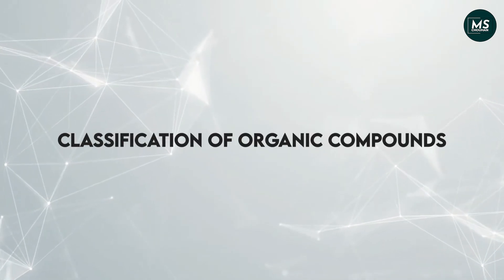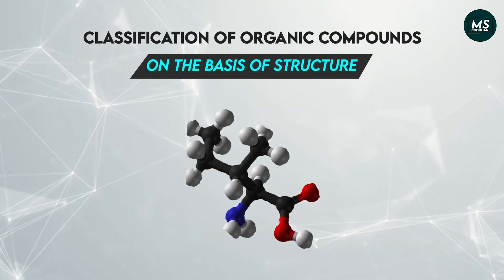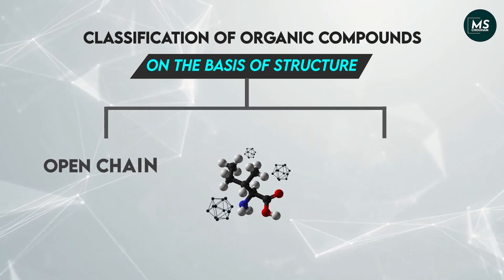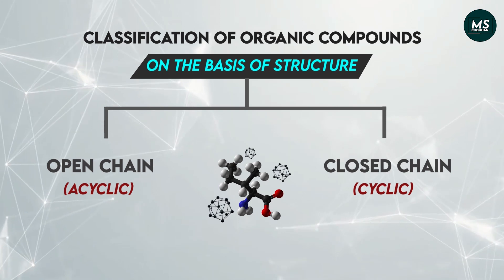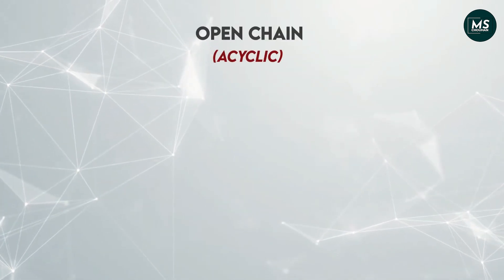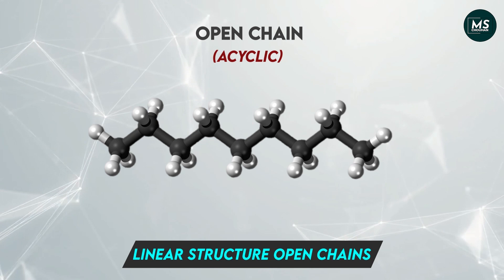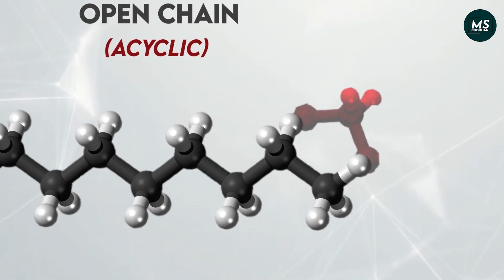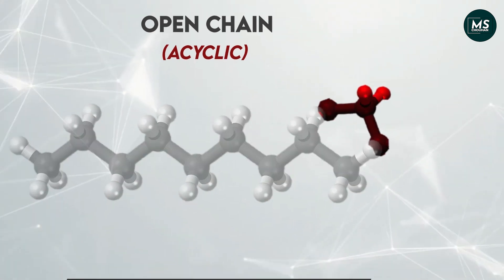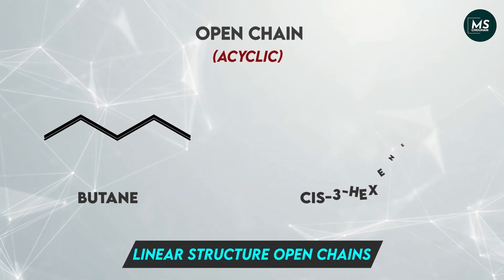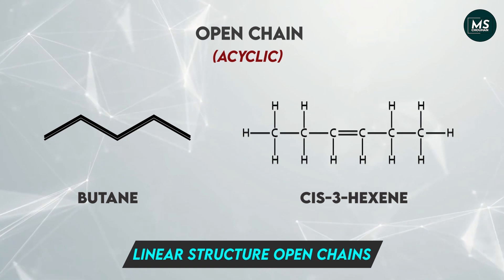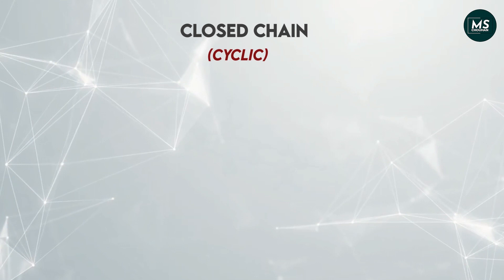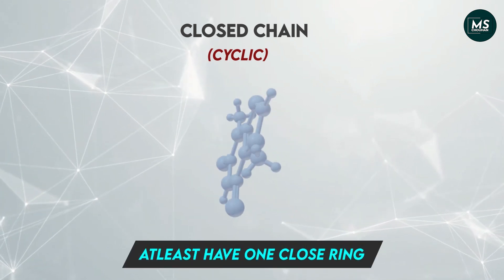Classification of organic compounds on the basis of structure: an organic compound can be classified into two categories — open chain organic compounds and closed chain organic compounds. In open chain organic compounds, we have a linear structure or open chains. These compounds do not contain a ring; for example, butane and cis-3-hexene. Cyclic compounds are those compounds that have at least one closed ring.